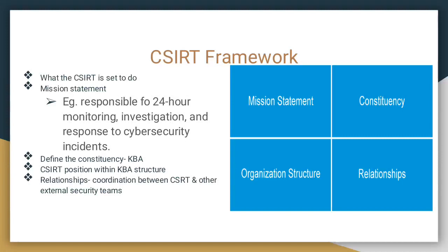Then you define the constituency, which is the company or client that you are giving this service to — for example, the KBA. You're supposed to understand what this company does, what its structure is, what their products are. Then you define the organization structure: you check where the CSIRT falls in the hierarchy, whether it's part of the IT team or operating independently. After that, you define the relationships between the CSIRT and other external security teams.